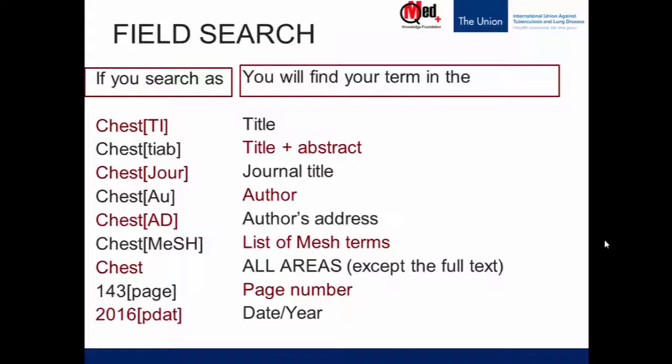Let's look at page and date tags. If I tag 143 with 'page,' we are looking for results where the article starts on page 143 of the journal. '2016 [dp]' means it's the date of publication year. These tags can also be written as PG for page or DP for date of publication.